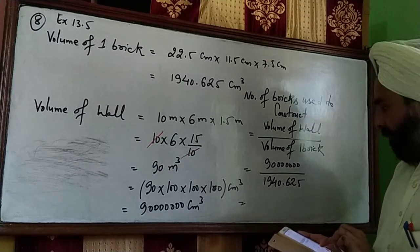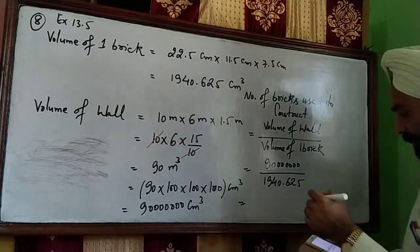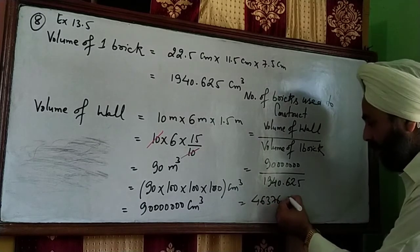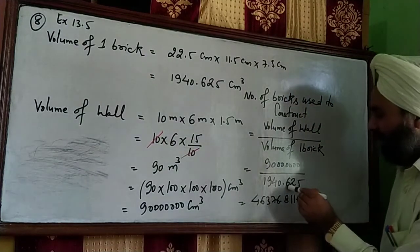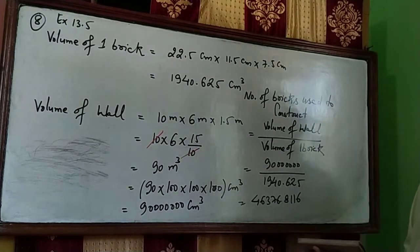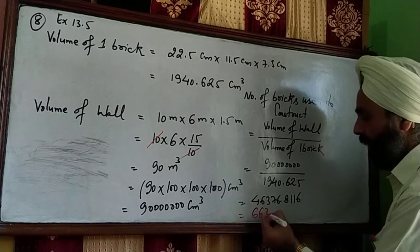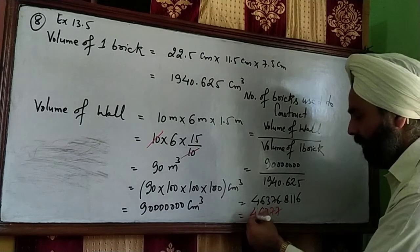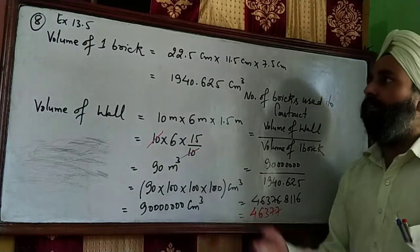Dividing these terms gives 46,376.8116. Since we cannot have a fraction of a brick, we round up the result. Therefore, 46,377 bricks will be required to construct the wall of the given dimensions. This is question number 8 of Exercise 13.5.